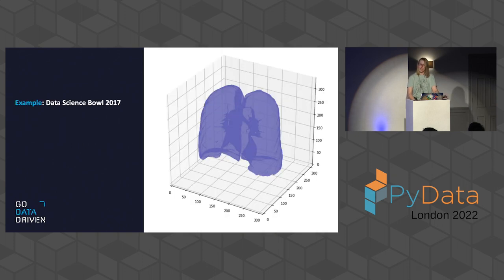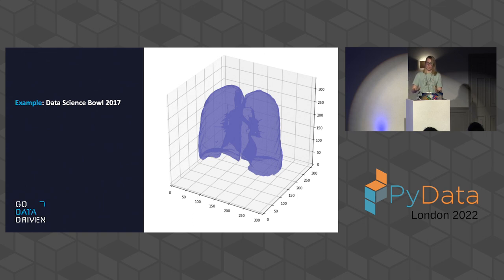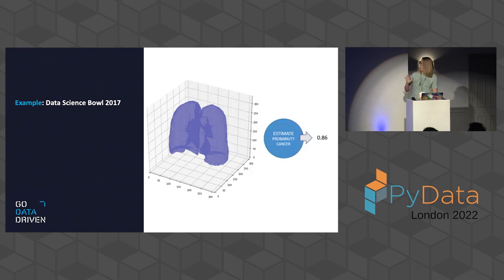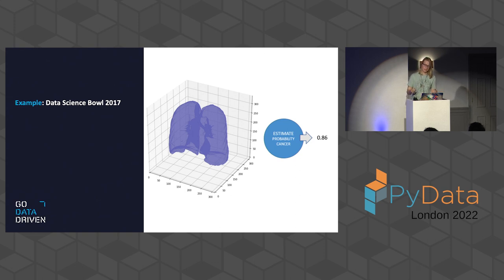As an example, I participated in the Kaggle Data Science Bowl of 2017. The goal was to predict whether someone was likely to get lung cancer in the following year based on a CT scan. I happened to be working at a company that did this as a product — we built a product that analyzed lung CT scans and determined whether there were abnormalities. We decided to participate, but we knew that if we just focused on the data we were presented with, it was essentially impossible.